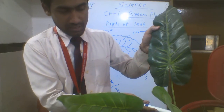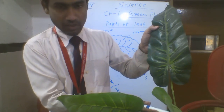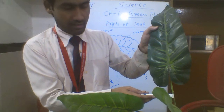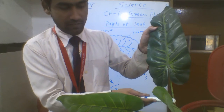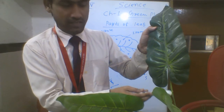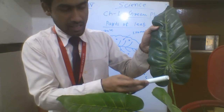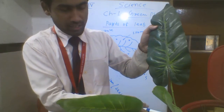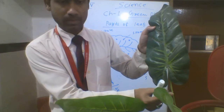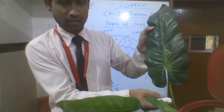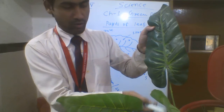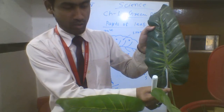The petiole is the part of the leaf which connects the leaf blade to the stem. This structure is known as the petiole — it attaches the leaf blade to the stem.